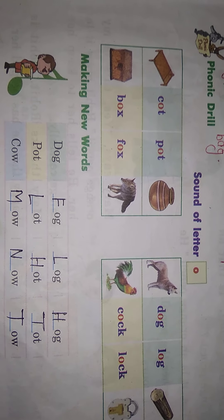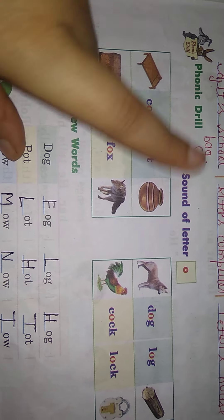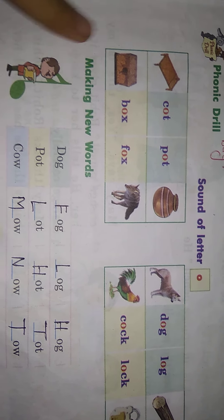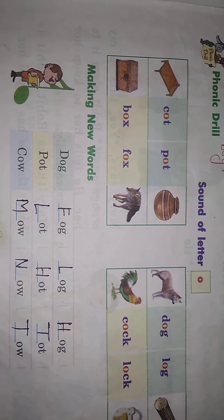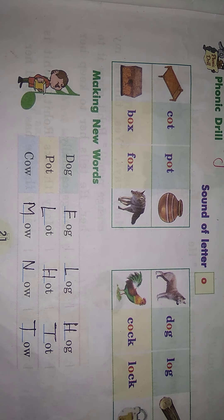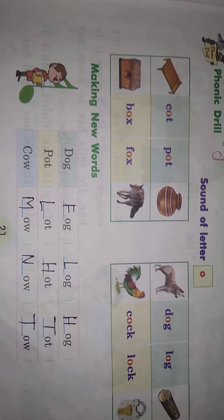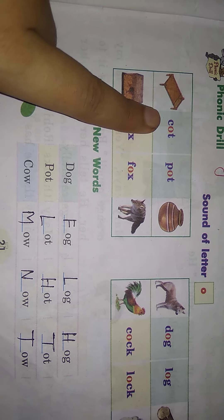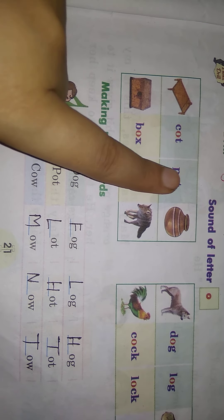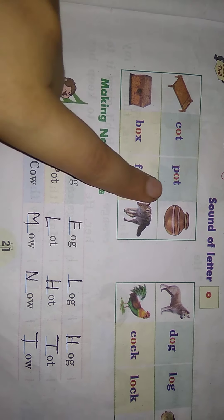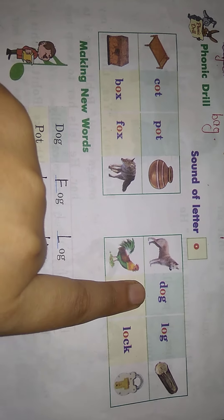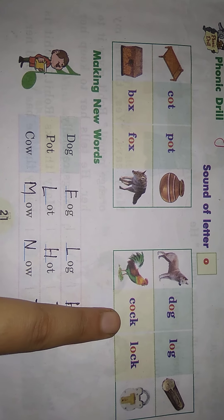Let us see the next exercise — Phonic Drill: Sound of letter O. Hum ne aapko har chapter mein yeh bataya hai ki kuch words ek hi tarah ki awaaz dete hain. So let us read these. Kya likha hai? Caught, pot — they are giving the same sound. Dekhiye: caught, pot. Dog, log. Box, fox. Cock, lock.